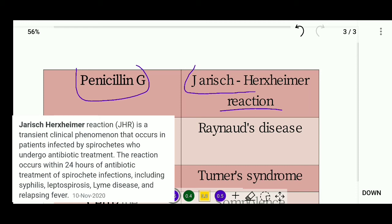Penicillin G is used for treatment of spirochete infections and can cause a Herxheimer reaction in patients.